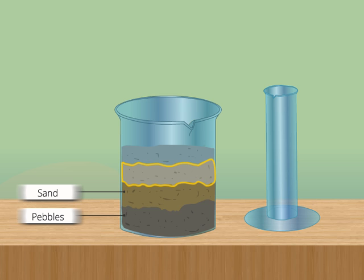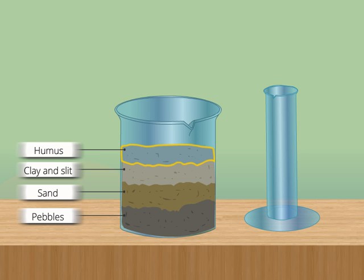The uppermost layer contains very fine particles of clay and silt. See, we also have something floating on the water. These are dead leaves. This is called humus.